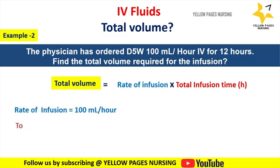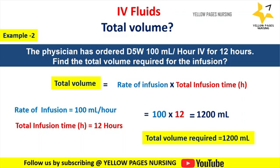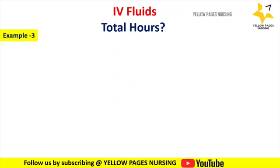Total infusion time in hours is 12. Applying the formula, we get 100 multiplied by 12, which gives 1200 ml. Hence the total volume will be 1200 ml.